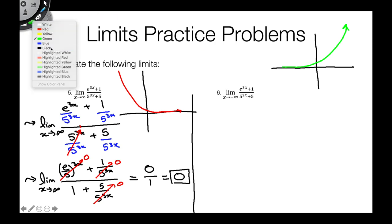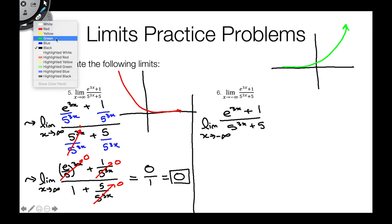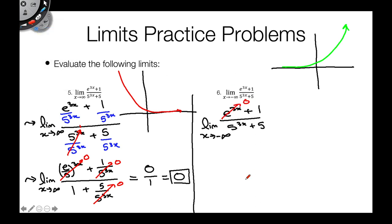So as x goes to negative infinity, everything representing exponential growth goes to 0. Taking the limit as x goes to negative infinity of e to the 3x plus 1 over 5 to the 3x plus 5 to the 3x: e to the 3x goes to 0 and 5 to the 3x goes to 0, so we're left with just 1 over 5 — that's our final answer.